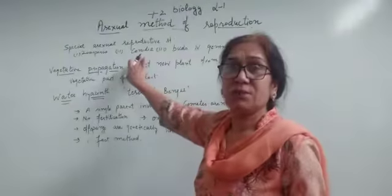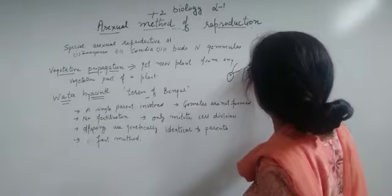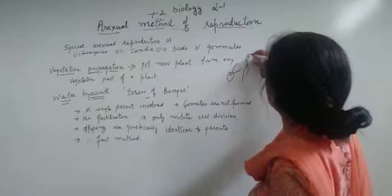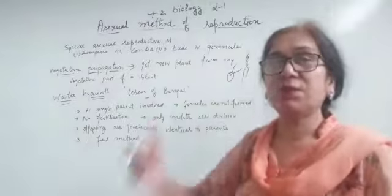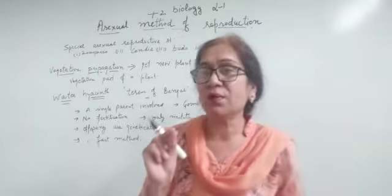Then conidia. These are exogenous spores found in Penicillium. This is Penicillium filament. These are found like this. Aise bahar bante unki body ki. These are exogenous spores found in Penicillium.